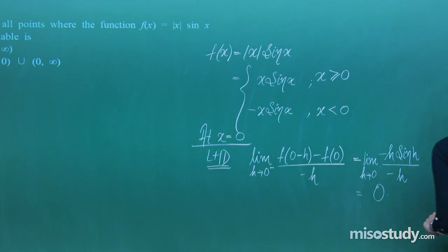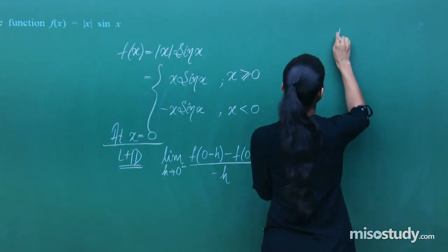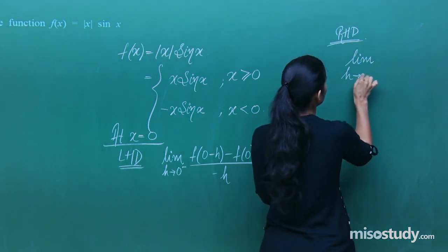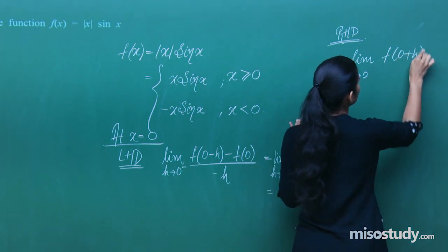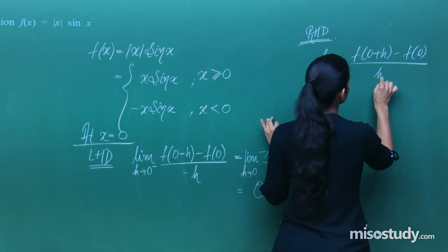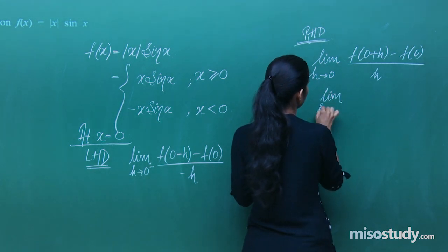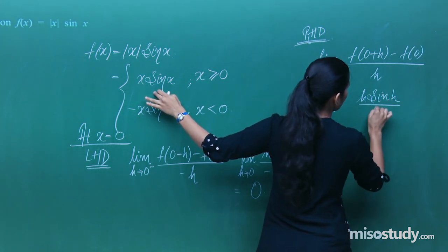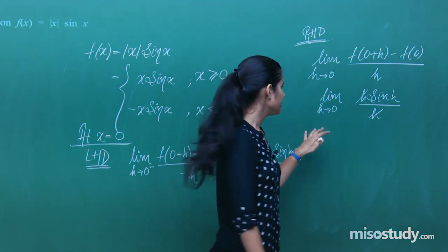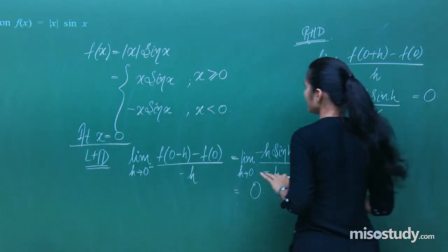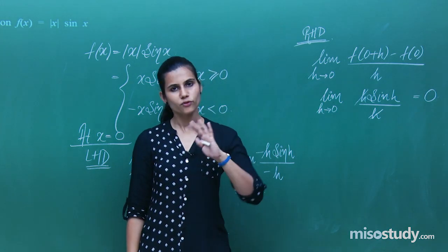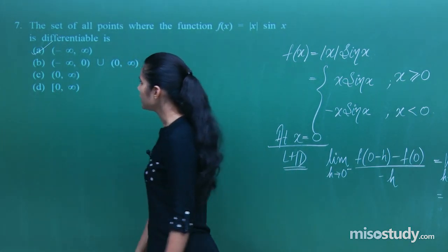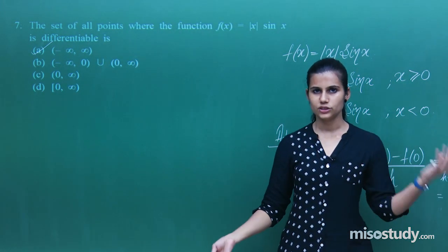Right-hand derivative at 0: limit h→0⁺ of [f(0+h) − f(0)] / h. f(0+h) = h·sin h and f(0) = 0, so this is limit h→0 of (h·sin h)/h = limit h→0 of sin h = 0. Both derivatives equal 0, so the function is differentiable at 0 as well. Therefore f(x) = |x|·sinx is differentiable on the entire real line (−∞, ∞).